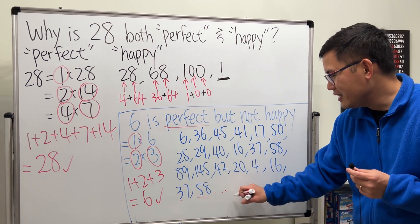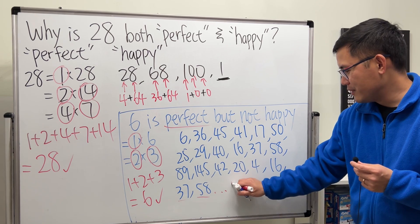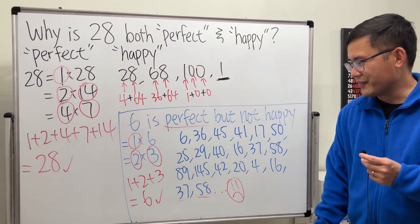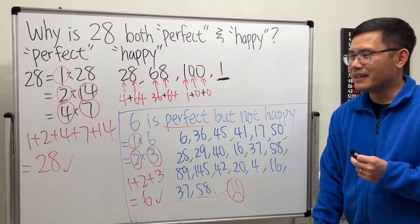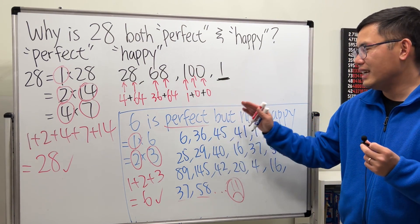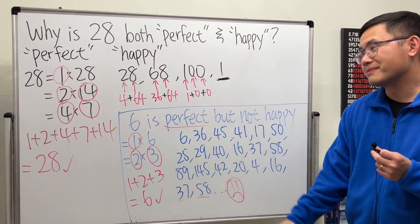So, unfortunately, 6 is not happy. I would give you a little sad face right here. Yeah. My marker is also about to run off ink. So, it's also a sad face. So, can you think about a number that's both perfect and also happy? Leave a comment down below. That's it.